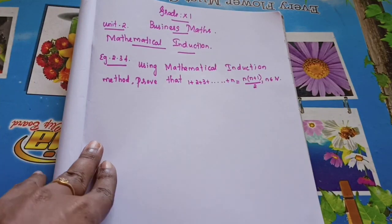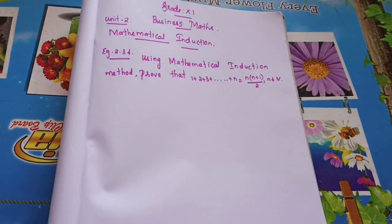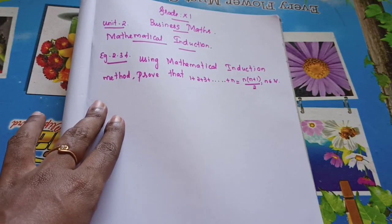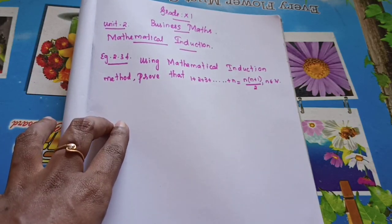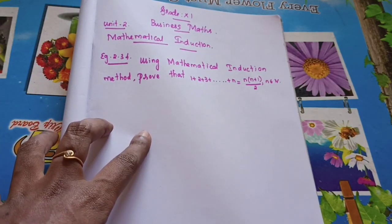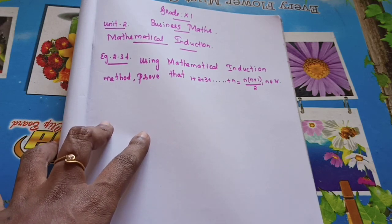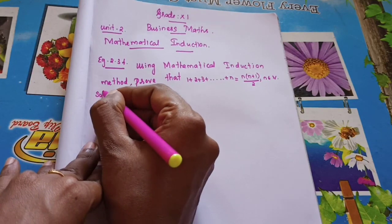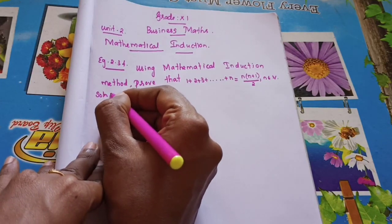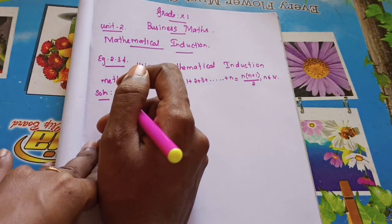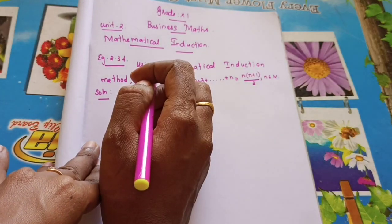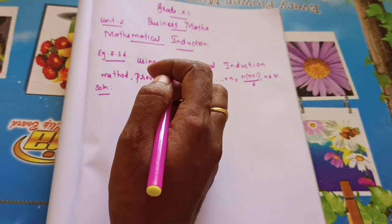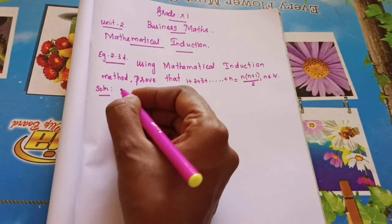Have you seen this formula anywhere? Yes — in last year's second chapter, in the last exercise, you learned this formula for natural numbers. Now we are going to prove whether it is true using the mathematical induction method. For each and every step they will allot marks, so steps are very very important.